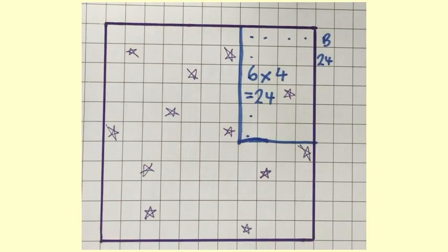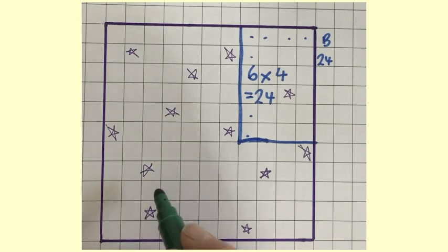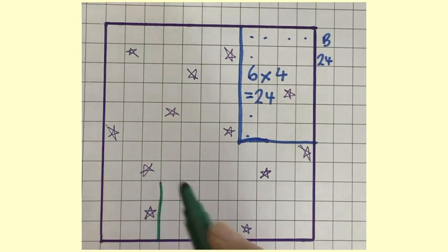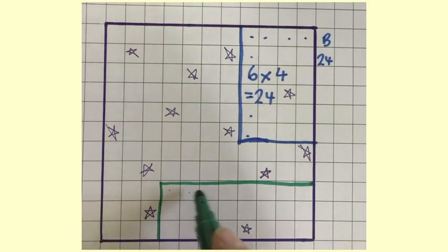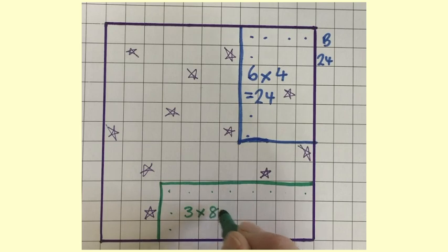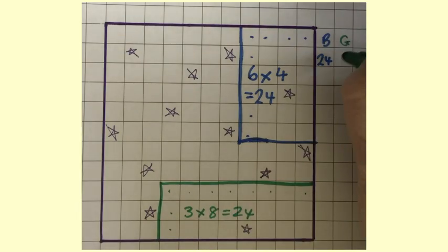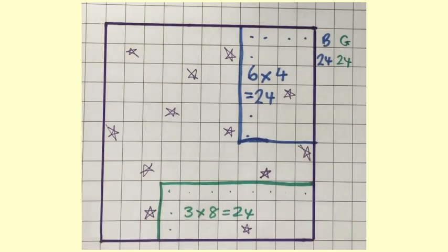Next it is green's turn and they're having a good think about where's the best place to put their lines and decides on drawing two lines in the bottom right hand corner. Counts up the number of columns, which is three rows times eight columns, which is also 24. Students will see that certain numbers pop up quite often.